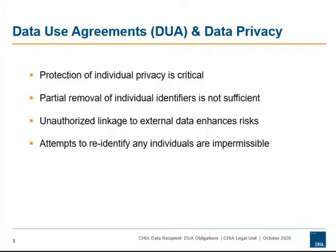Compliance with the terms of the CHIA data use agreement serves a variety of mutually beneficial purposes. Protection of individual identities and personal health histories is of the utmost importance. Removal of direct identifiers still leaves data subject to sophisticated technical analysis that could allow the re-identification of individuals. Although CHIA removes some individual identifiers from its data, it is still vulnerable to re-identification, particularly when linked with other data sources.